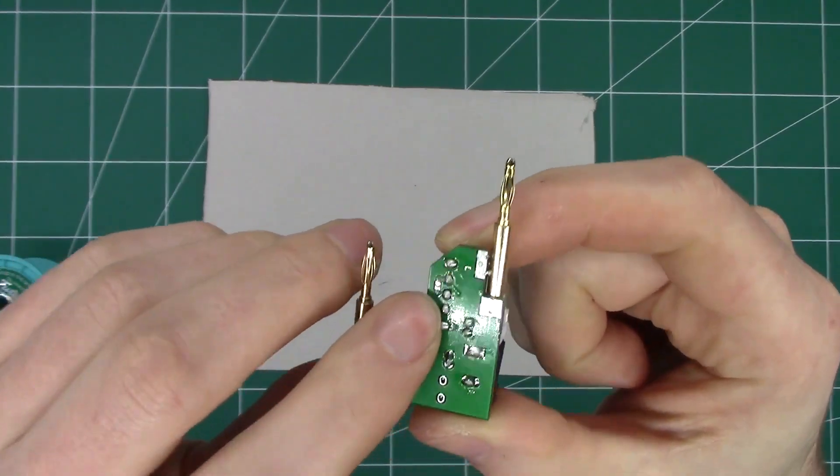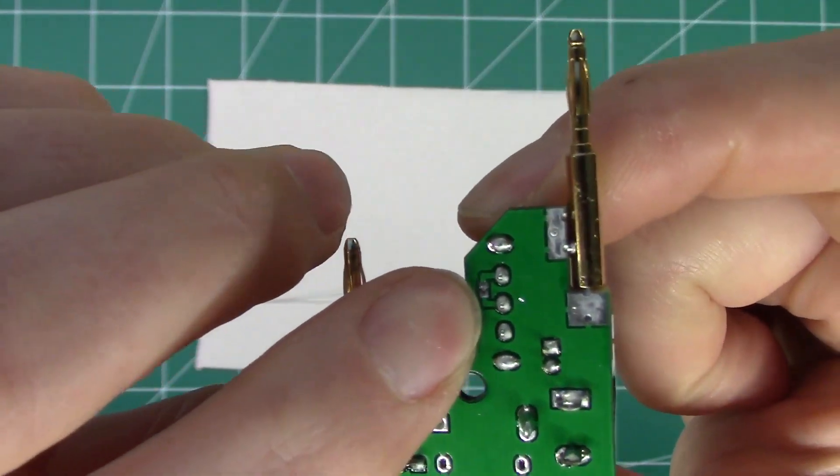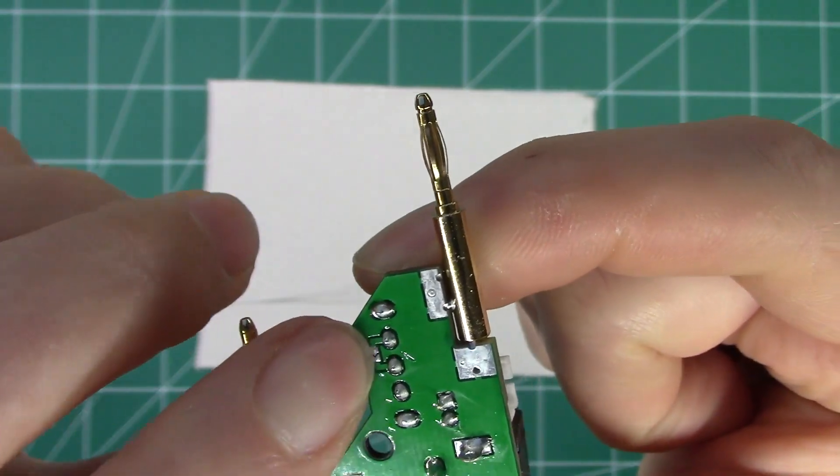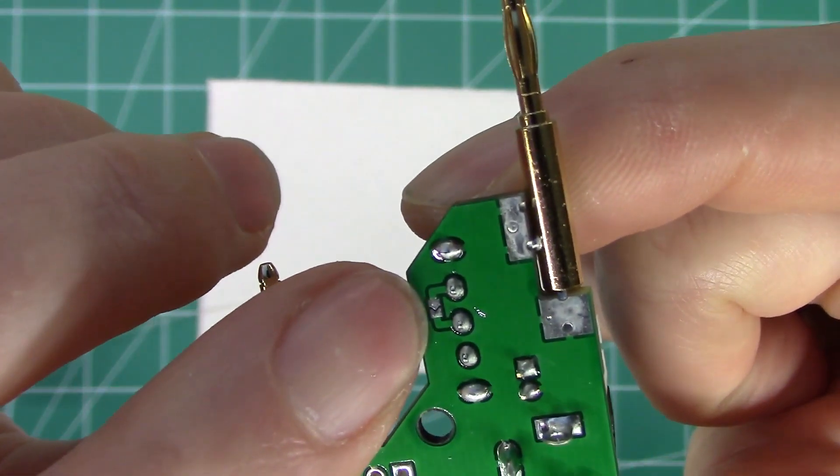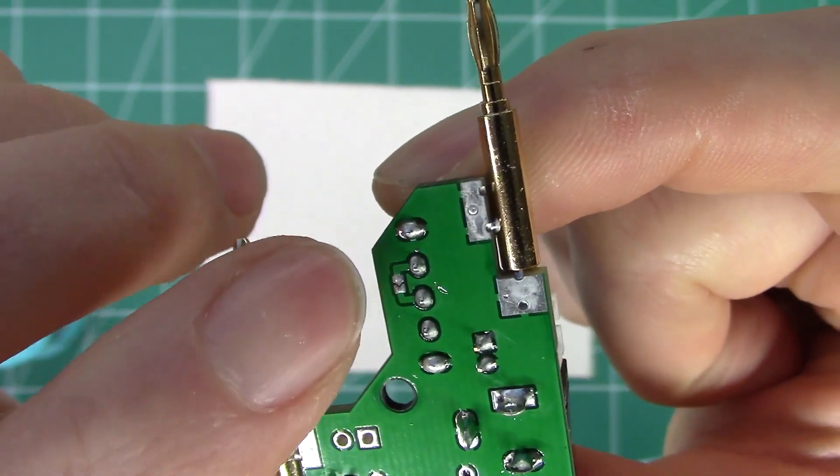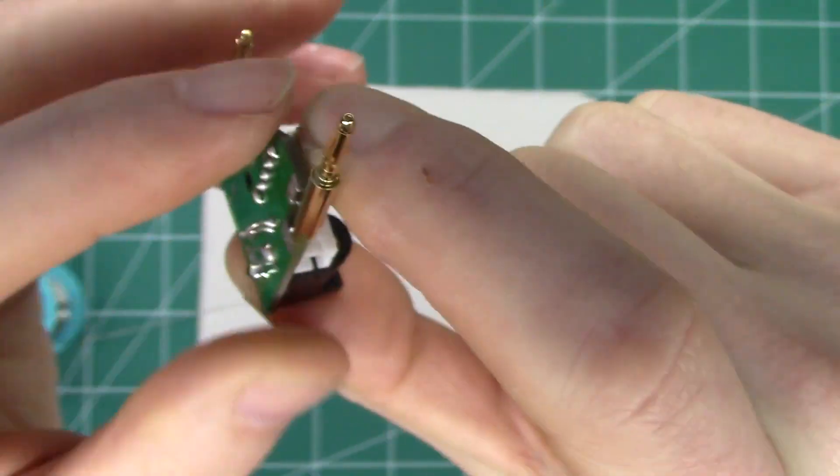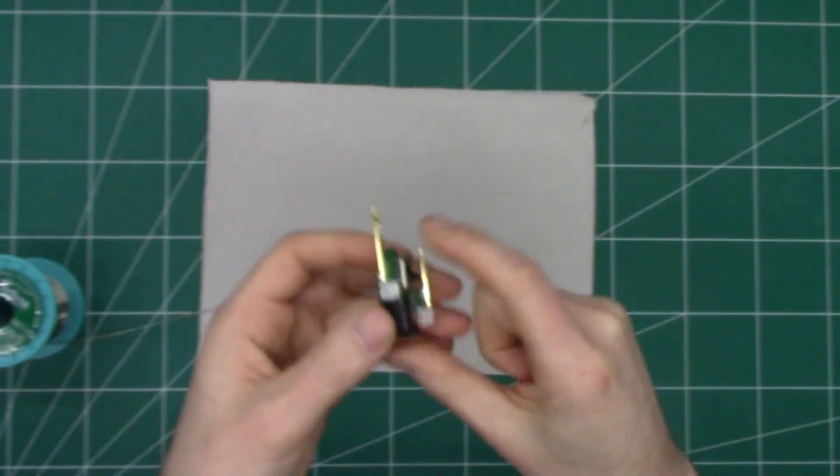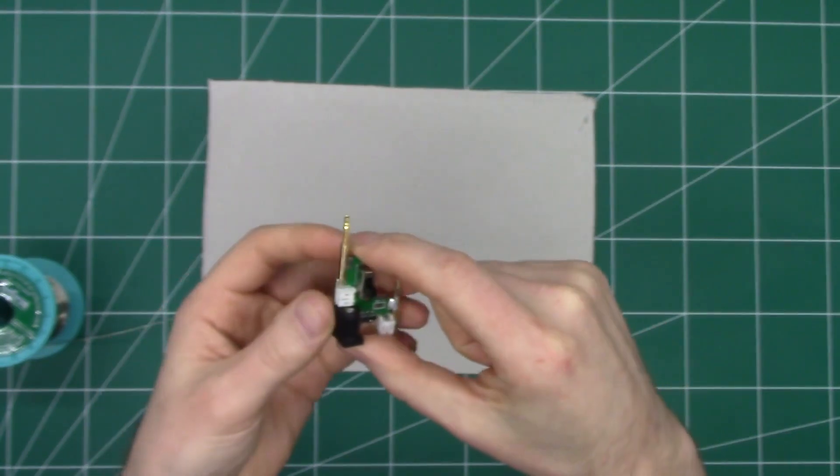If you don't want to use the switch at all, there's a little solder point here. If we apply some solder between these two pads, it will short out the switch so that it's constantly on. Maybe you have a switch as part of your power supply or want to use some external device for controlling on and off features.